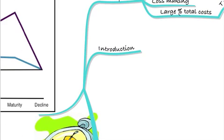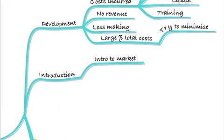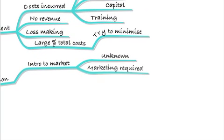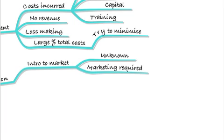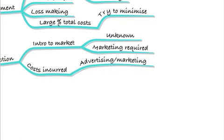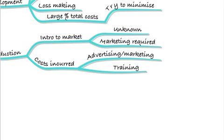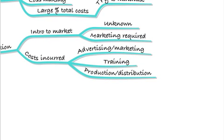Once we get out of the development phase, we'll have a product, and we'll have to introduce it to the market. Because it'll be an unknown product, we'll require marketing to make the public aware of it — and that's going to be costly. The costs incurred at this stage will be advertising and marketing costs, but we'll also have some training costs to ramp up production. You'll also start to get production and distribution costs, because we've introduced the product to the market, so we need to supply it.